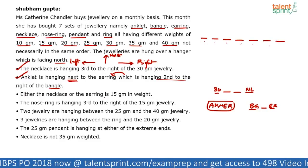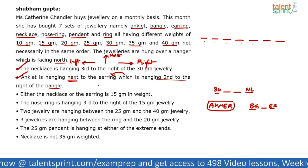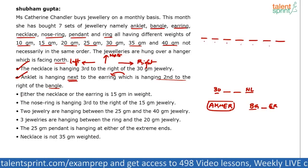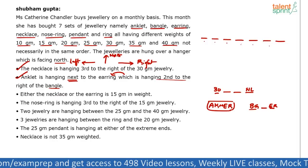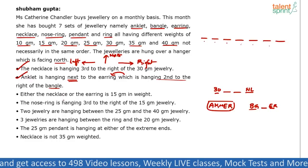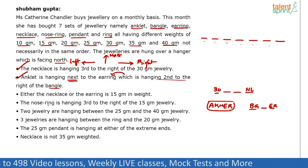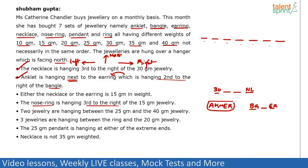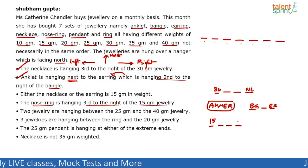Next clue: either the necklace or the earring is 15 grams in weight. We will try and see this — either necklace is 15 grams or earring is 15 grams; we'll figure that out. Next clue: the nose ring is hanging third to the right of 15 gram jewellery. So if this is 15 gram jewellery, nose ring is third to the right — first, second, third — nose ring comes here.